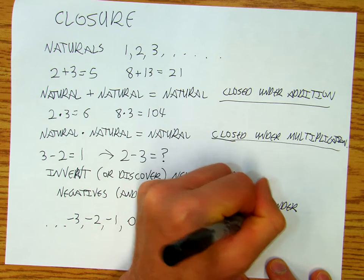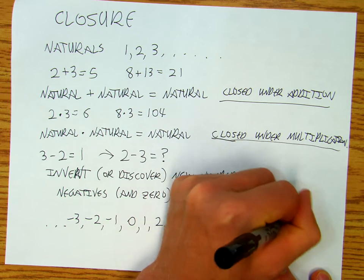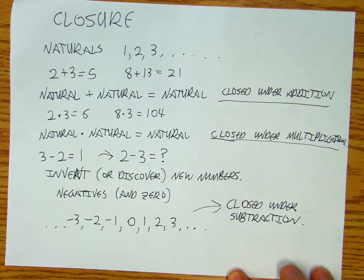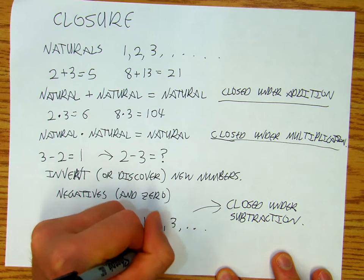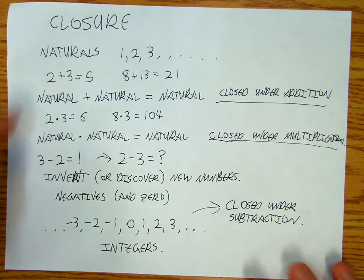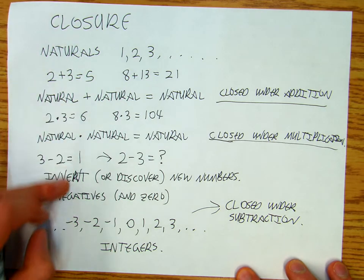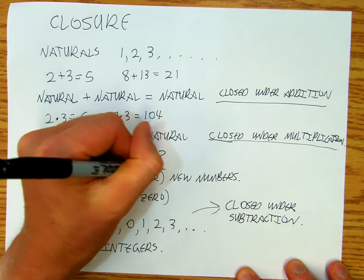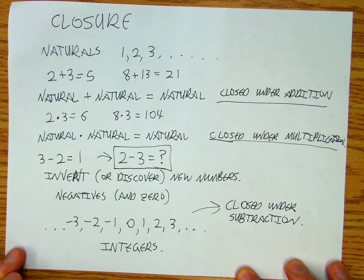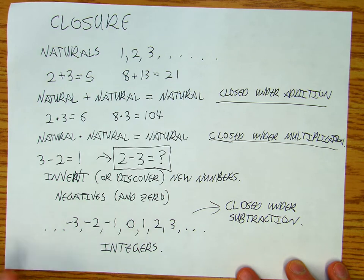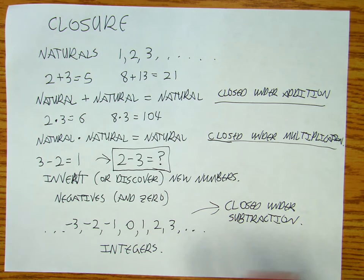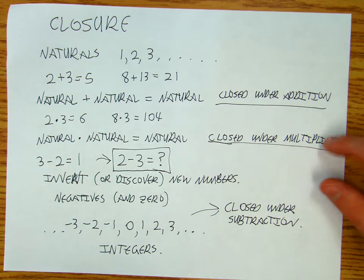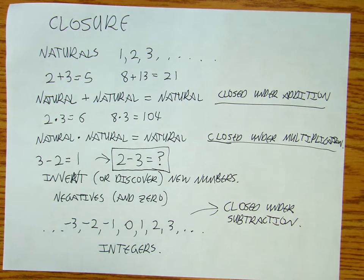So we started with the naturals, but then we got to a point where if we wanted to do a certain problem, we needed to come up with new numbers. Those new numbers were integers, which are closed under subtraction. So now the integers are closed under addition, multiplication, and subtraction. What about division?